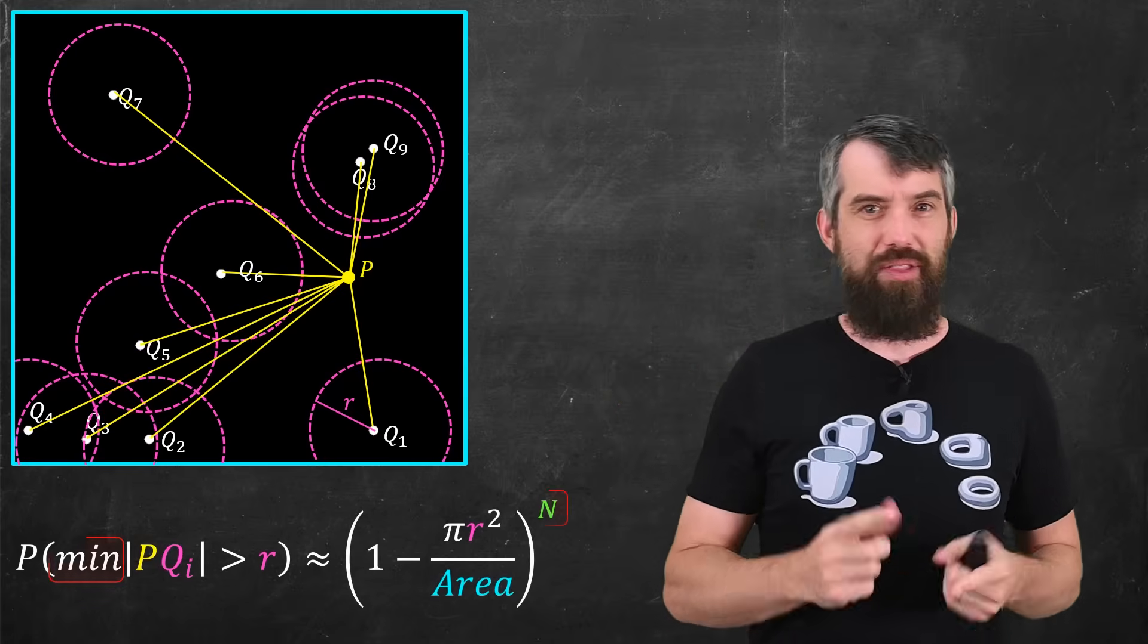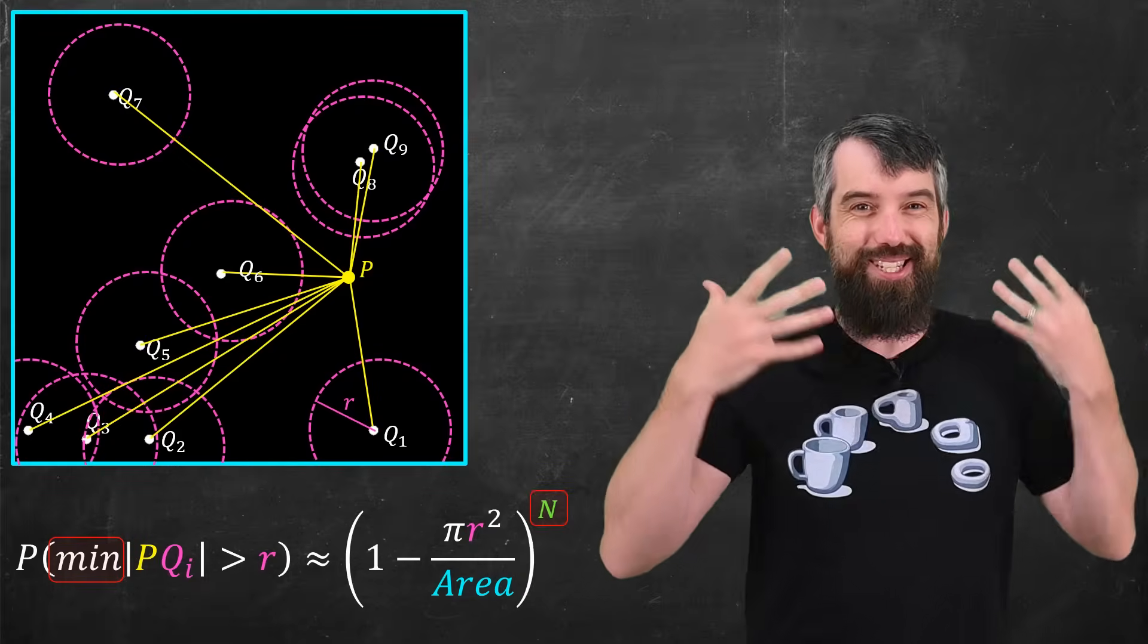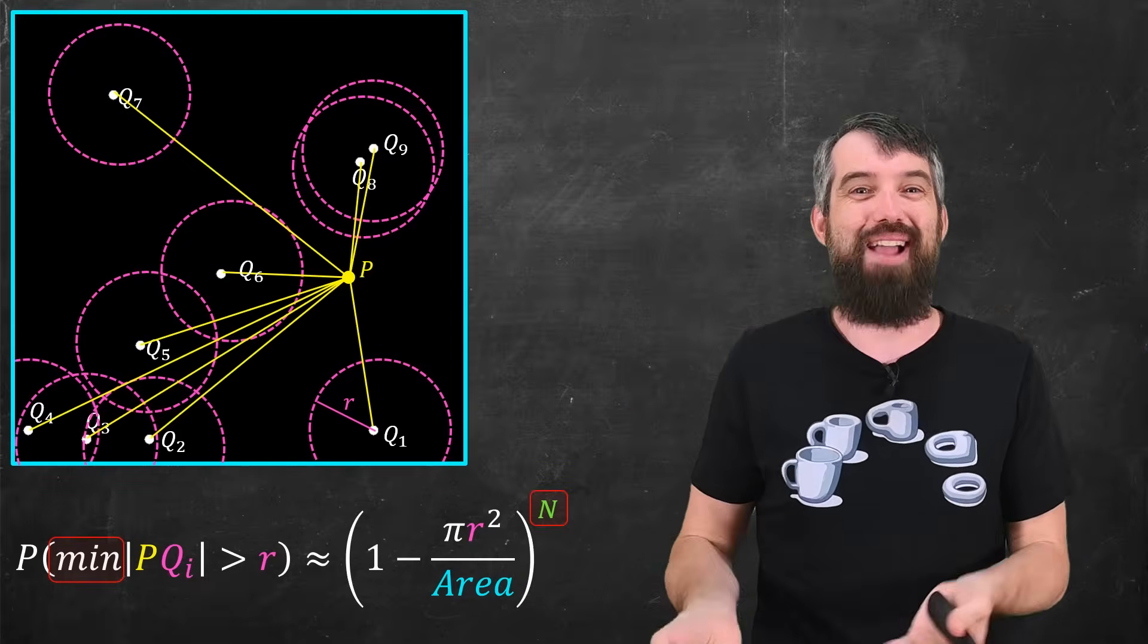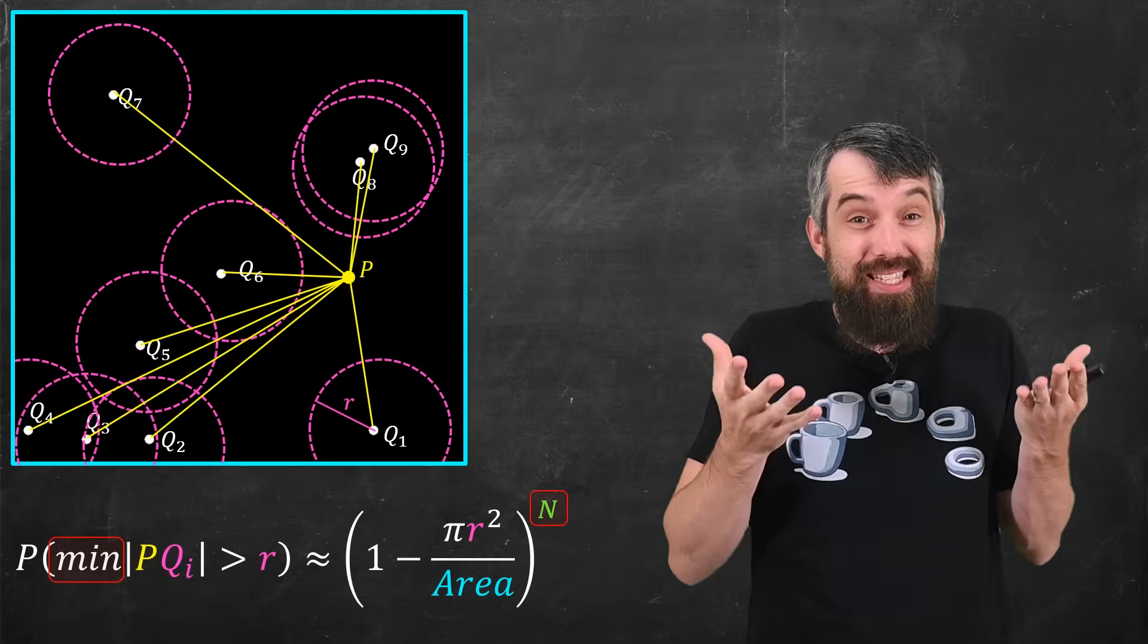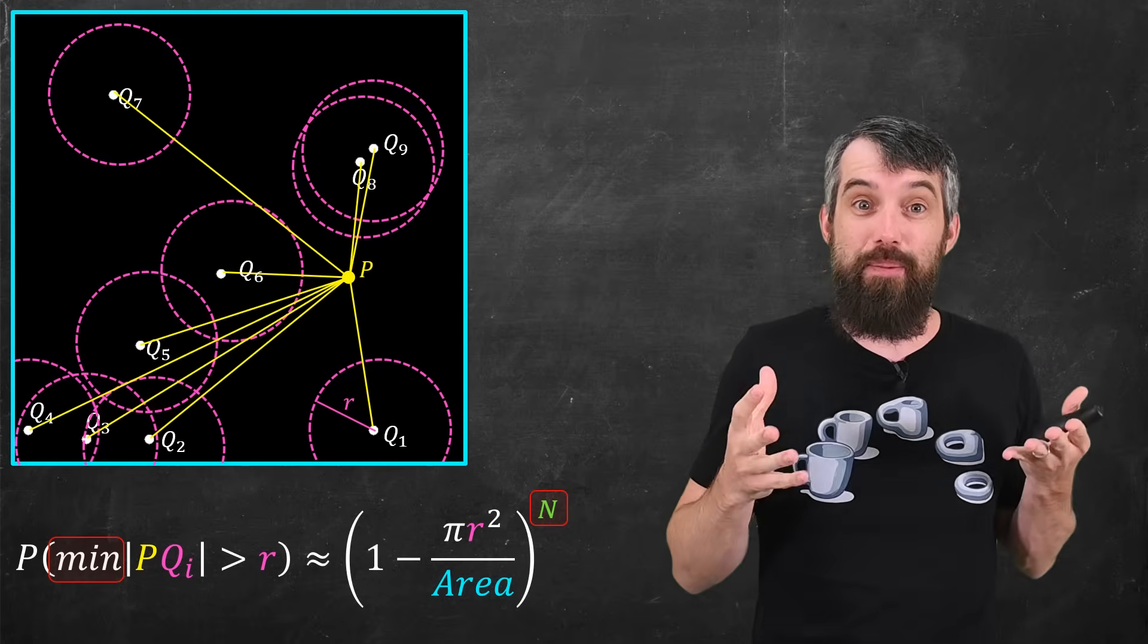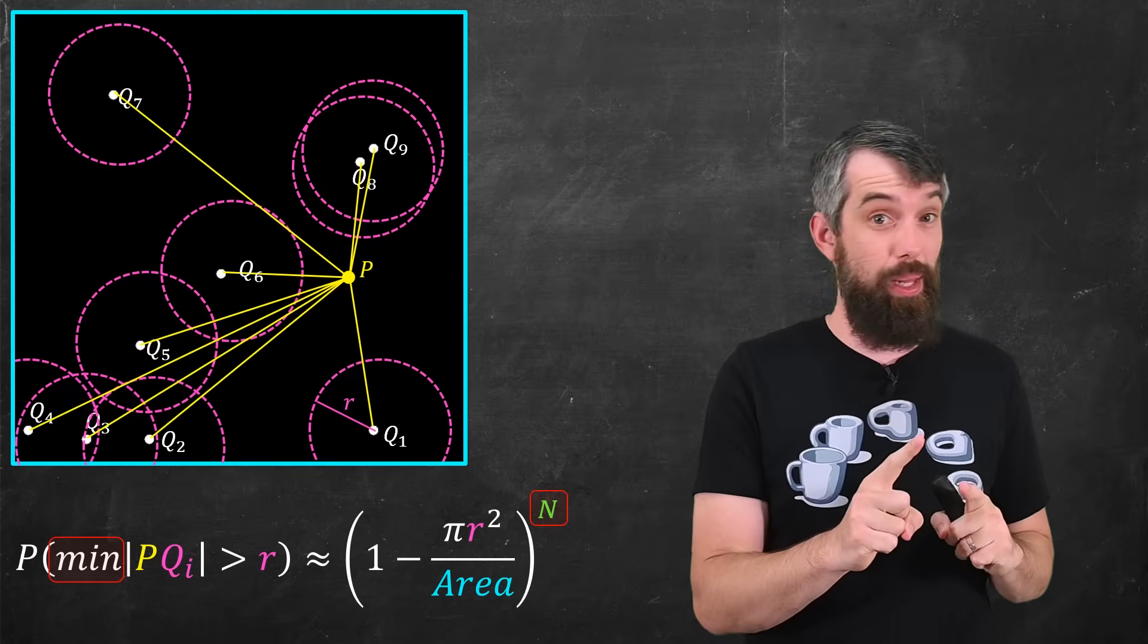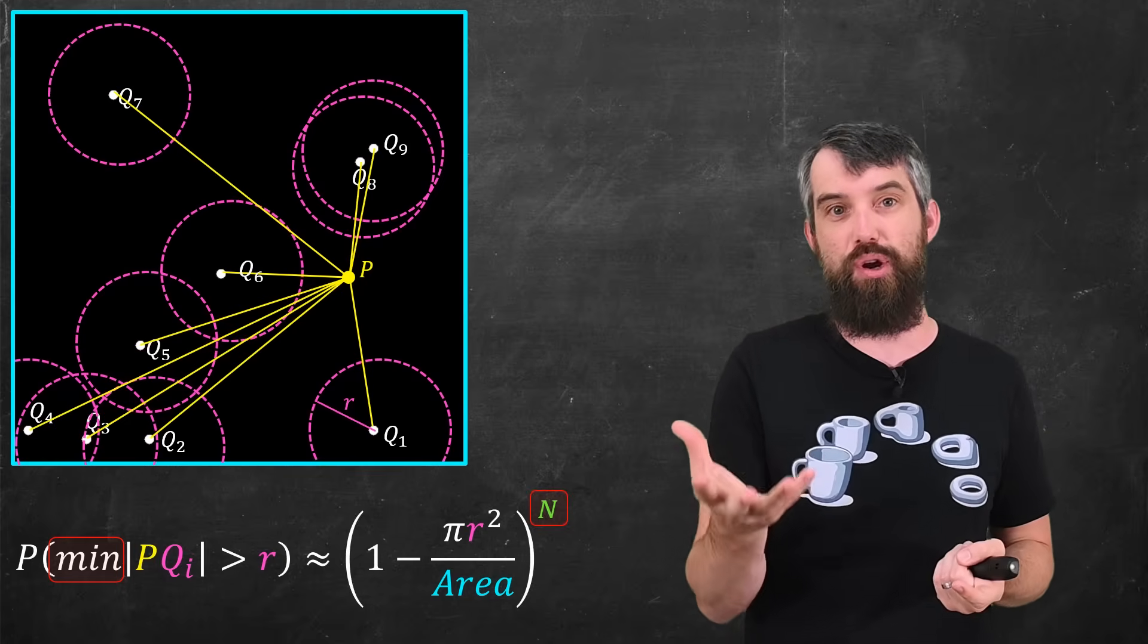Then for the computation, these are independent. Remember I said my seed points were independent? And so it's just the product of this n times. If there's n different seed points, it's that 1 minus pi R squared divided by the area. It's that to the power of n. The independence here was crucial to allow this computation just to be a pure multiplication.